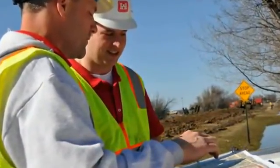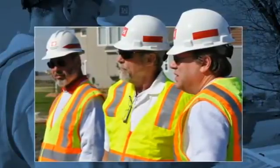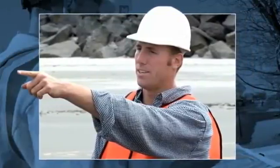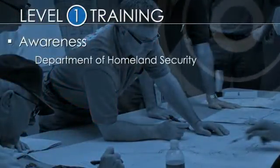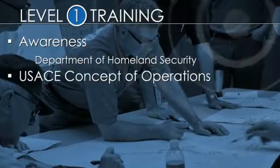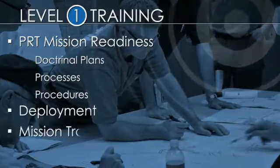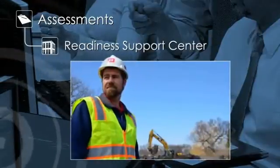Training tools and capabilities for civil contingency operations include the PRT Level 1 and Level 2 training, which is thoughtfully designed for both awareness and task-specific training. It is provided in portable and in-residency formats with a professional curriculum for team leaders, assistant team leaders, emergency managers, and subject matter experts. Level 1 training includes awareness training mandated by the Department of Homeland Security and the USACE concept of operations training that introduces the novice to the doctrinal plans, processes, and procedures of PRT mission readiness, deployment, and mission tracking. It also includes baseline awareness courses required under the National Incident Management System. These distance learning courses are self-paced and provide assessments that are tracked by the Readiness Support Center to certify and provide credentials for responders.